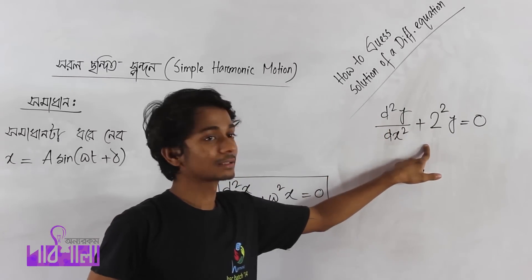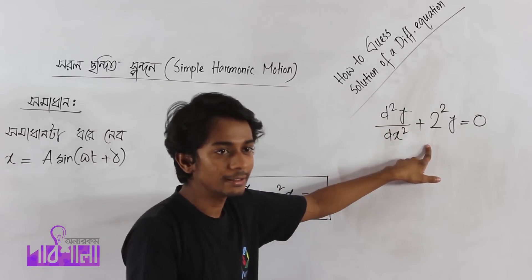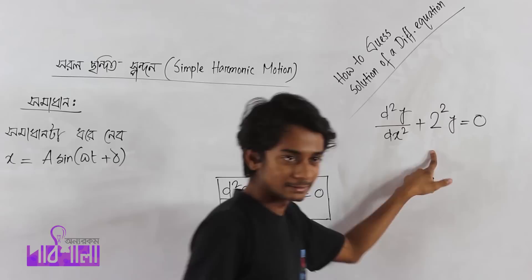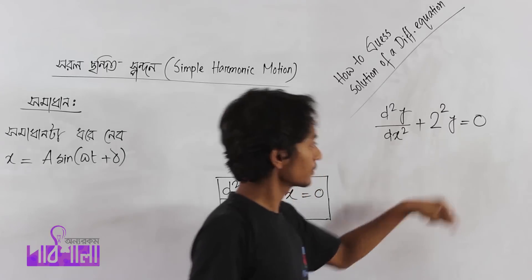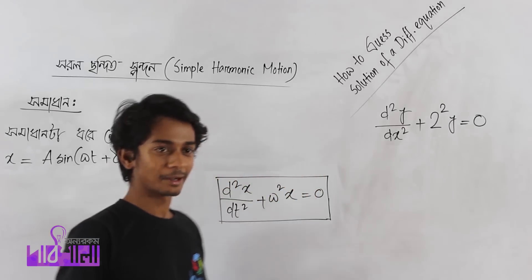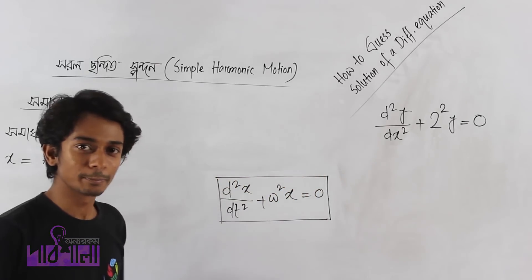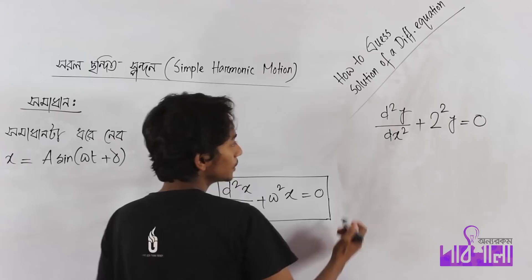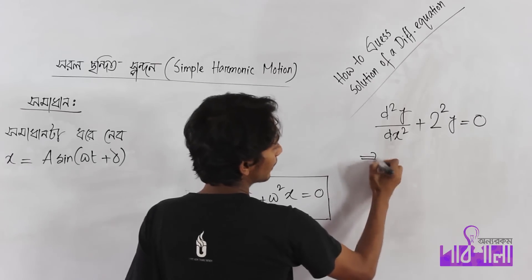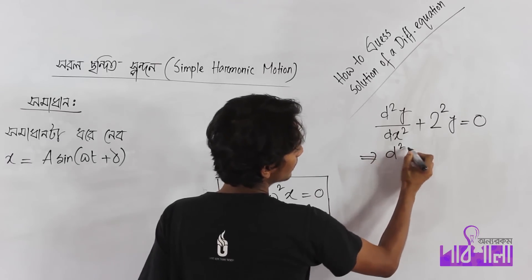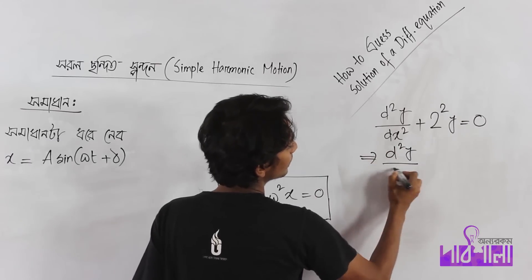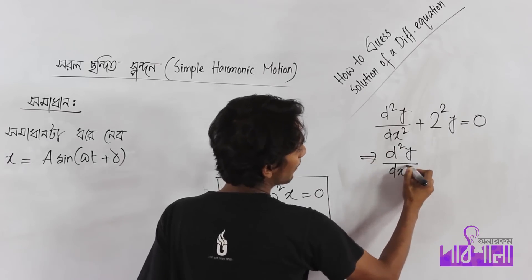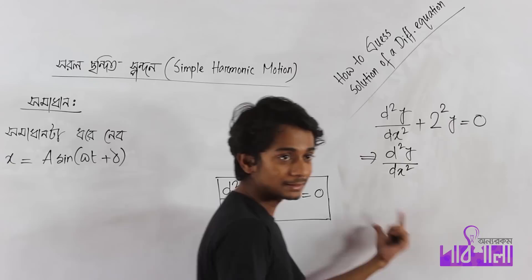d²x/dx² plus 2-squared y equal to 0. 2-squared y is a special case, so we can guess the same way. We have to find the function of y.